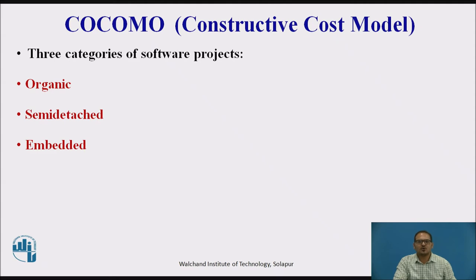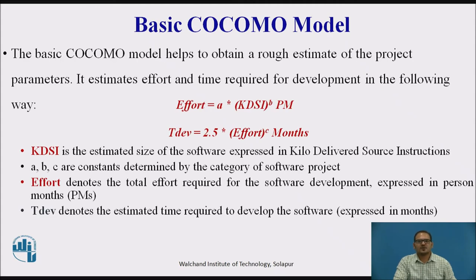Boehm suggested that estimation of project parameters should be done through three stages: basic COCOMO model, intermediate COCOMO, and complete COCOMO. The basic COCOMO model provides a rough estimate of project parameters. Effort is calculated as: Effort = a × (KDSI)^b person-months. Development time is calculated as: Time = 2.5 × (Effort)^c months. KDSI is the estimated size of the software in kilo delivered source instructions, and a, b, c are constants determined by the category of the software project.